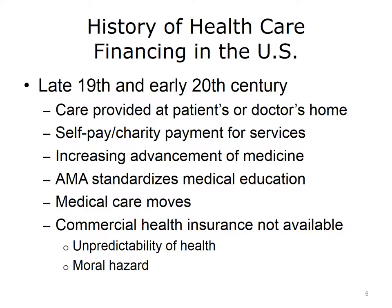The view of medicine as a science grew as advancements in areas such as infectious disease and surgery improved the lives and health of the population. Early in the 20th century, the American Medical Association began to standardize the training that new doctors received, and the quality of care improved. Medical care for illness began to move from the home to the doctor's office and hospitals. During this time, commercial health insurance was not available, as insurers could not predict the risk or cost due to the unpredictability of health.